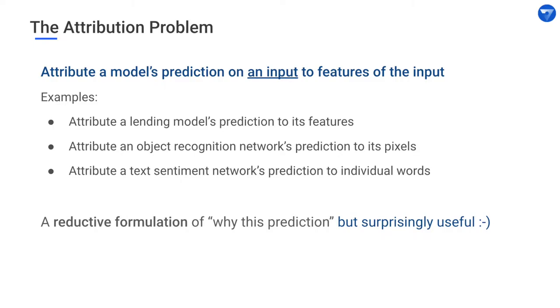Before talking about integrated gradients, let's look at a simpler attribution method. Suppose we were attributing the prediction of a linear model. One way to attribute it is to simply look at the feature value times the coefficient. So if your linear model is y = w1*x1 + w2*x2 + ... + wn*xn, where w1, w2 are the coefficients and x1, x2 are the feature values, then the contribution of the i-th feature is wi times xi — feature value times coefficient.